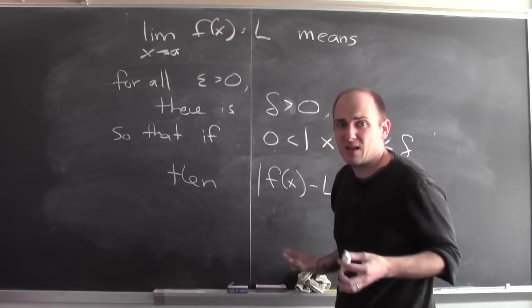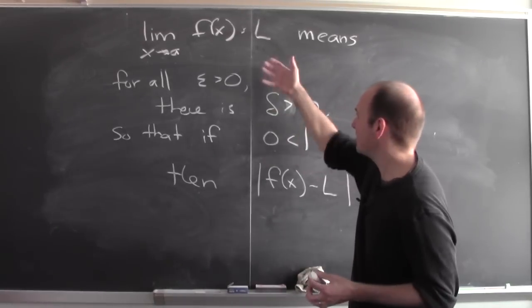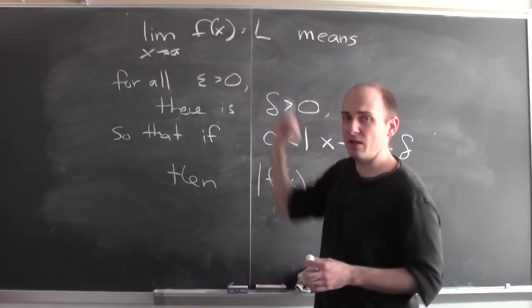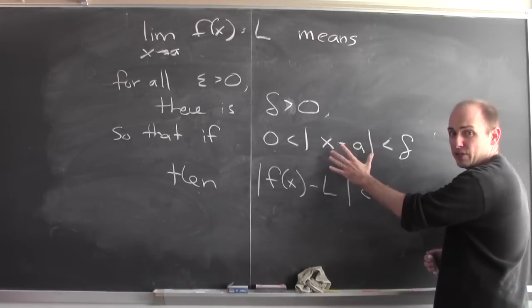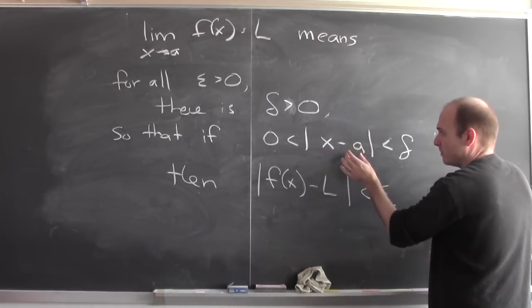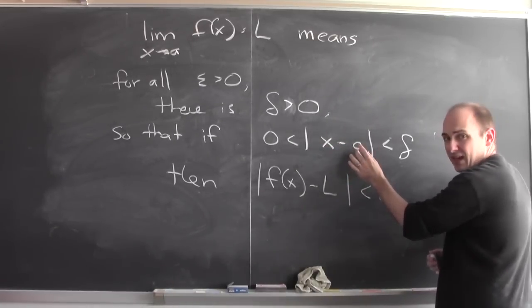So how to reconcile those two perspectives? How does this have anything to do with things being close? The key, take a look at this absolute value of a difference. The absolute value of x minus a is the distance between x and a.